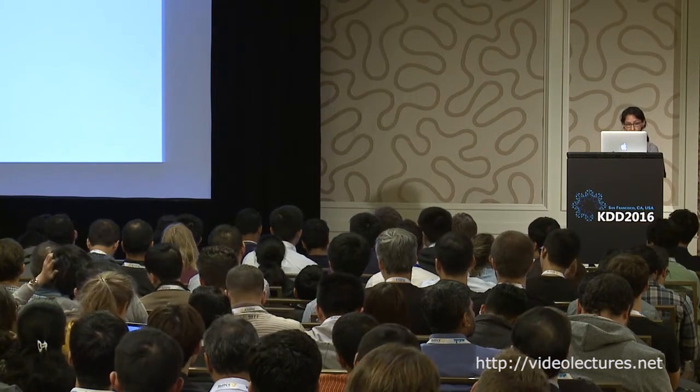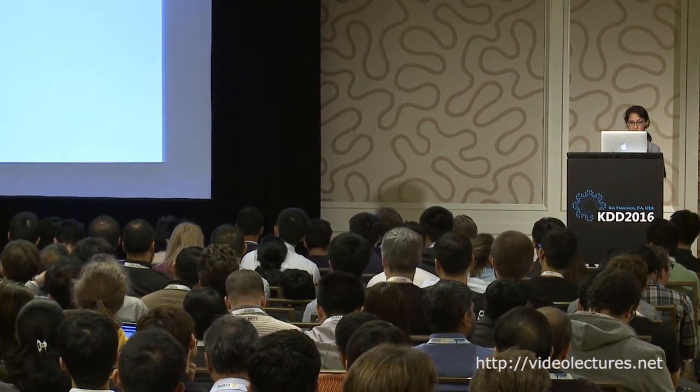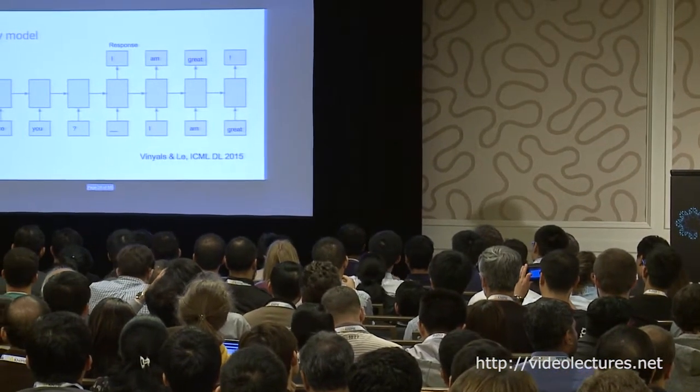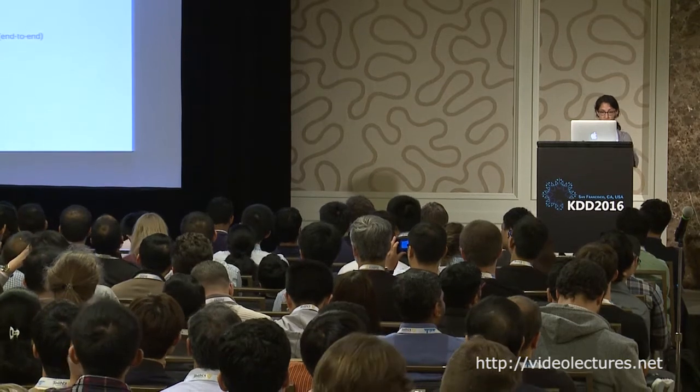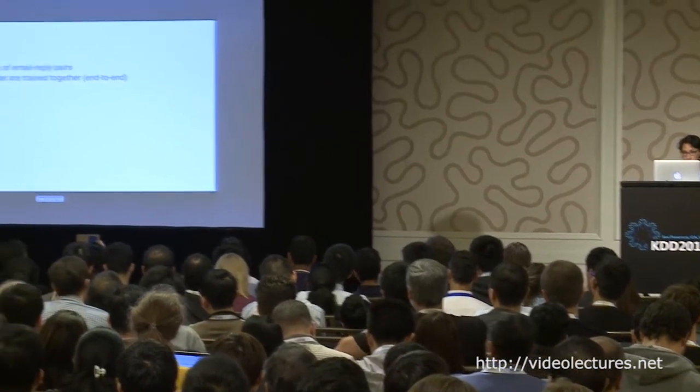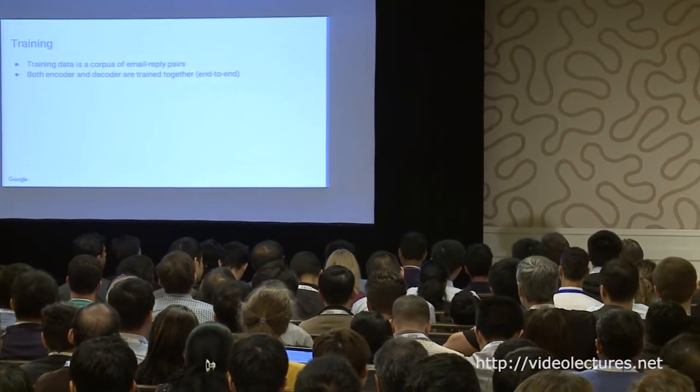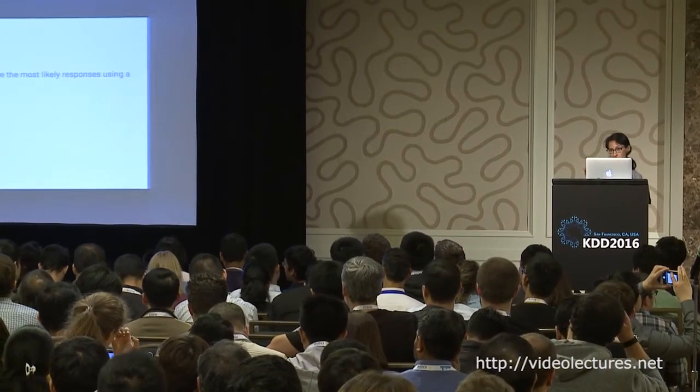Putting that all together, the Smart Reply model has the encoder reading tokens of the incoming email one at a time, then the resulting encoding initializes the decoder, which outputs words one at a time — actually a distribution. This model is trained end-to-end on a corpus of email reply pairs, with both encoder and decoder trained together. The recurrent neural networks are LSTMs in practice. At inference time the resulting model is fully generative, and we use something like beam search to find the maximum likelihood response.